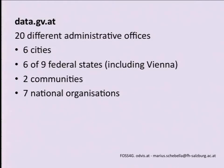We have six cities that publish data, six of nine federal states at the moment that publish data, including Vienna which is at the same time a federal state and a city. There are two communities and there are seven national organizations, like those publishing financial data or similar material.